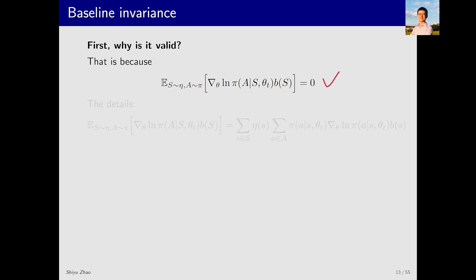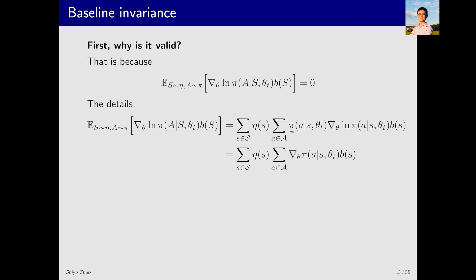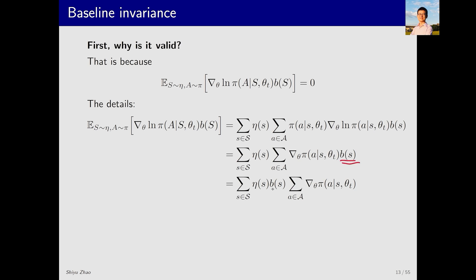I will explain why it is valid — it's actually quite simple. If we move this term to the left, we get this expression. Expanding the expectation according to its definition, we first sum over the states S with the distribution for each state S being the one shown here. Then we sum over the actions A with their corresponding distribution. We can combine the two terms together. When we take the gradient of the logarithm of pi, this is essentially the gradient of pi divided by pi. The two pi's cancel each other out, leaving the gradient of pi. The baseline B can be factored out front, because B is only a function of S and has no relationship with A.